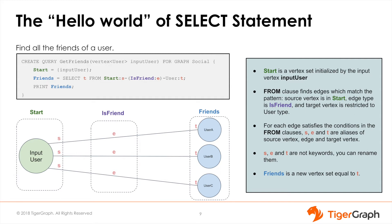The FROM clause finds edges which match the pattern. Start is our source vertex, is_friend is the edge type we're using, and User is the target vertex. We have restricted ourselves to the SELECT statement will only traverse the edges that match this declared edge vertex type.